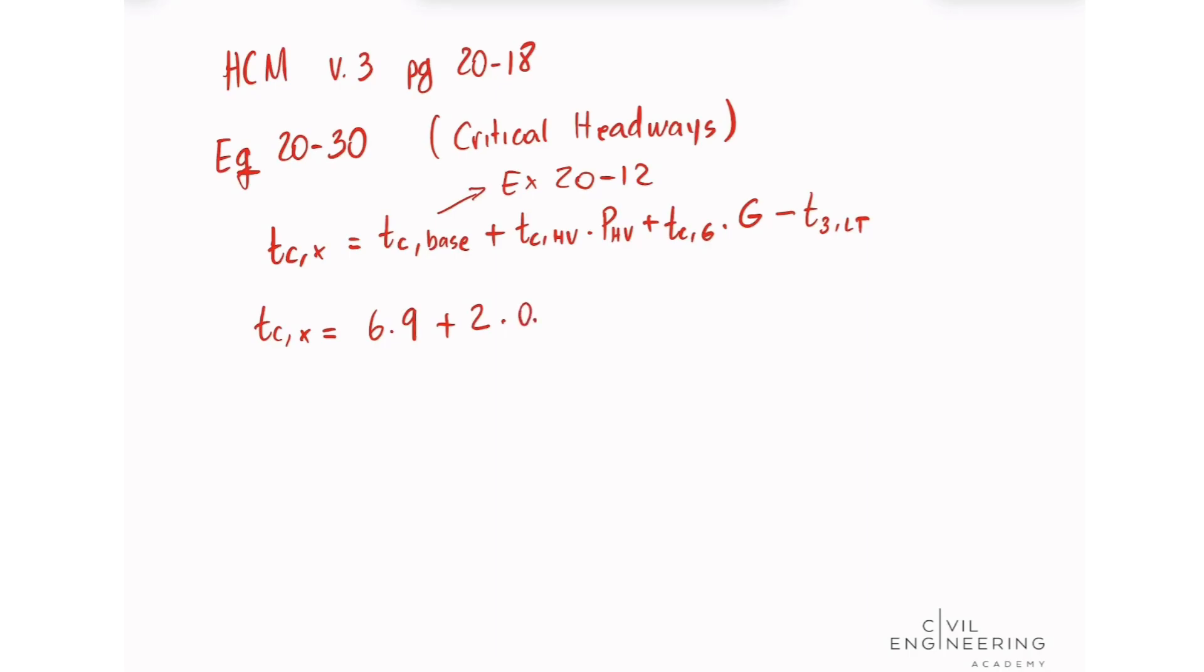In decimals, that's going to be 0.04 plus now the adjustment factor for the grade given the movement. For movement 9, which is the right turn from minor street, we're going to put 0.1 times the grade. In this case, we have a downgrade of 3%, so we need to consider this negative 3 because it's a downgrade, minus our adjustment factor for intersection geometry.